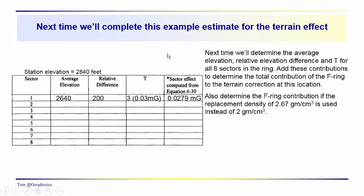So we'll fill out a table that looks like this. We've got average elevation. We've got the relative difference. We have the T from the hammer tables. And then we have the T we can also calculate directly from the formula that we developed for the ring. We can get a little bit more precise value here. So we'll actually make some comparisons and see how the estimates from the hammer tables compare to those from our calculation. We'll use an Excel file to do that.